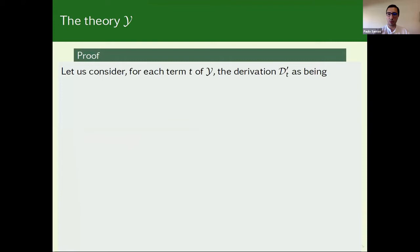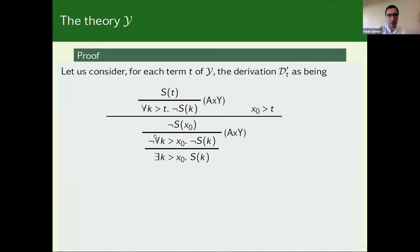Then let us see the proof of this fact. I will consider several partial derivations, and everything in the end will make sense. So please stick to each derivation. So let us consider for each term of Y, the derivation D' of T as being this one. And let us look more carefully to it. It has two open assumptions. S(T) and X0 greater than T. Here on the left part, we apply the axiom Y. And we simply rewrite this S with the universal quantifier. But now observe that X0 greater than T satisfies this antecedent. And so we have not S(X0). And again, we can apply axiom Y to have the negation of this universally quantified formula. But this is simply the existential form. I believe this derivation is simple to follow.